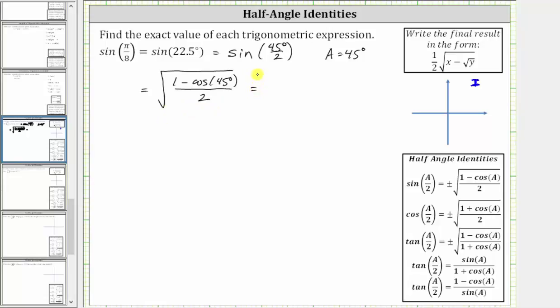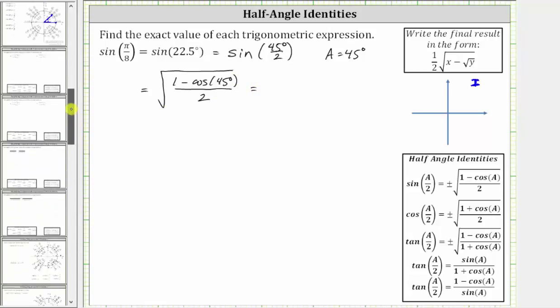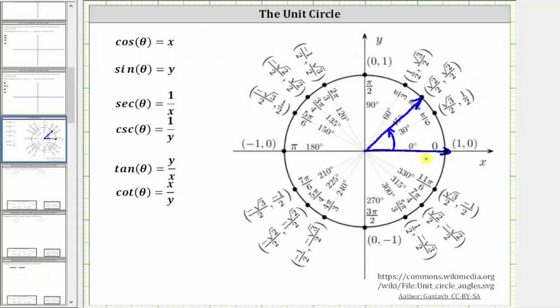The next step is to find the value of cosine 45 degrees. In standard position, the terminal side intersects the unit circle at this point, where both the x and y coordinates are the square root of two divided by two. And we know on the unit circle, cosine theta equals x and sine theta equals y. The cosine of 45 degrees is square root two divided by two.